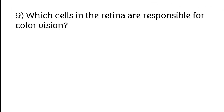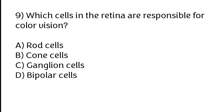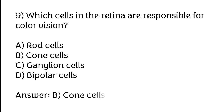Which cells in the retina are responsible for color vision? Options: A) Rod cells, B) Cone cells, C) Ganglion cells, D) Bipolar cells. The correct answer is option B, cone cells.